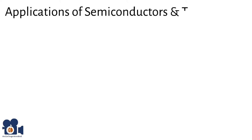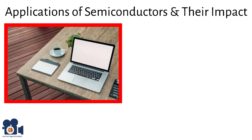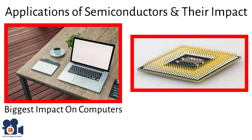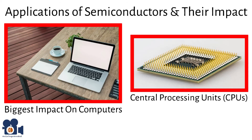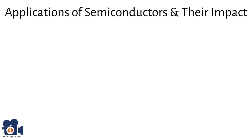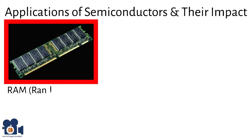Semiconductors have had one of their most significant impacts on computers. They play key roles in central processing units (CPUs), which are built using millions of transistors on semiconductor chips that switch on and off rapidly to perform calculations and execute instructions. Semiconductors are also used in RAM and ROM chips, which store data and instructions for quick access by the CPU.